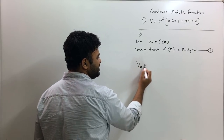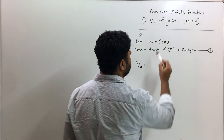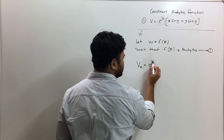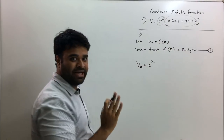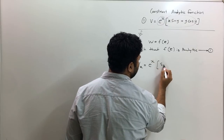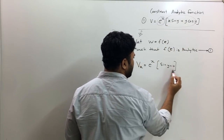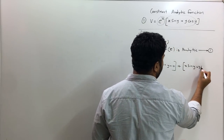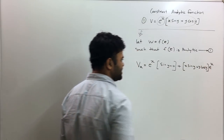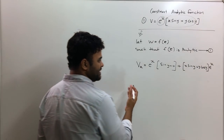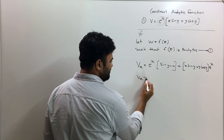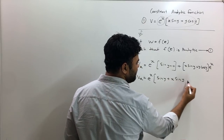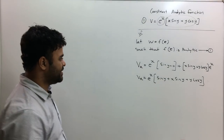We need the partial derivatives, so from V we find Vx — that is, differentiation of V partially with respect to x. Using the product rule (u·v' + v·u'): e^x remains as is, and the derivative of x·sin(y) with respect to x is just sin(y). Then we get x·sin(y) + y·cos(y) times the derivative of e^x, which is e^x. So Vx = e^x(sin(y) + x·sin(y) + y·cos(y)).